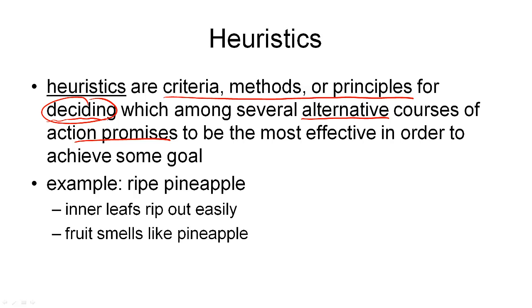We use heuristics in everyday life. For example, here you see a heuristic for deciding whether a pineapple is ripe. If you ever go into a shop and want to buy a ripe pineapple, if you can rip out the inner leaves easily and the fruit smells like a pineapple should smell, then you're looking at a ripe pineapple.